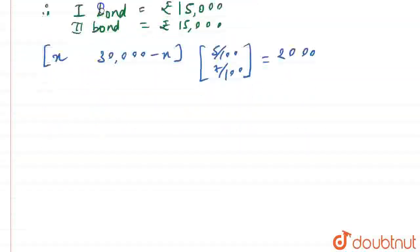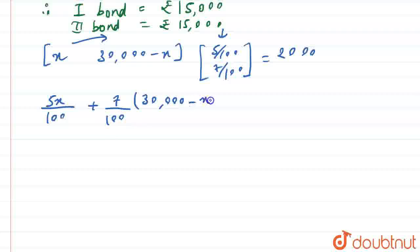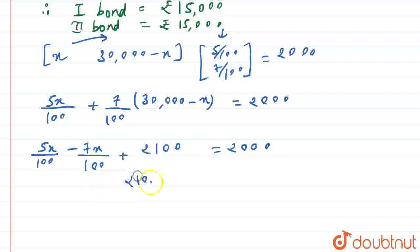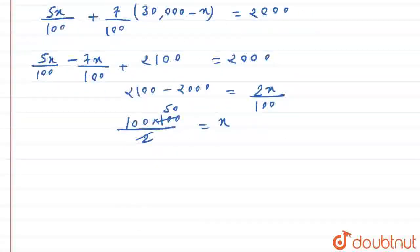Performing the matrix multiplication again: 5X/100 + 7/100 × (30,000 − X) = 2000. Simplifying as before: 5X/100 − 7X/100 + 2100 = 2000. So 2100 − 2000 = 2X/100, giving 100 = 2X/100, therefore X = 100 × 100/2 = 5000. So X is equal to Rs. 5000.